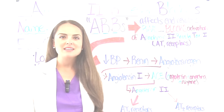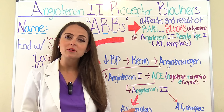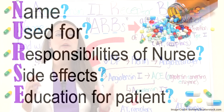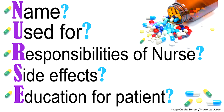As we've been studying these medications in this pharmacology series, we have been remembering the mnemonic NURSE. This helps us remember those important concepts we need to know for exams. N is for name, specifically the family name of the drug. U for use — what's it used to treat? R for responsibilities of the nurse. S for side effects. And E for education for the patient — those important teaching points.